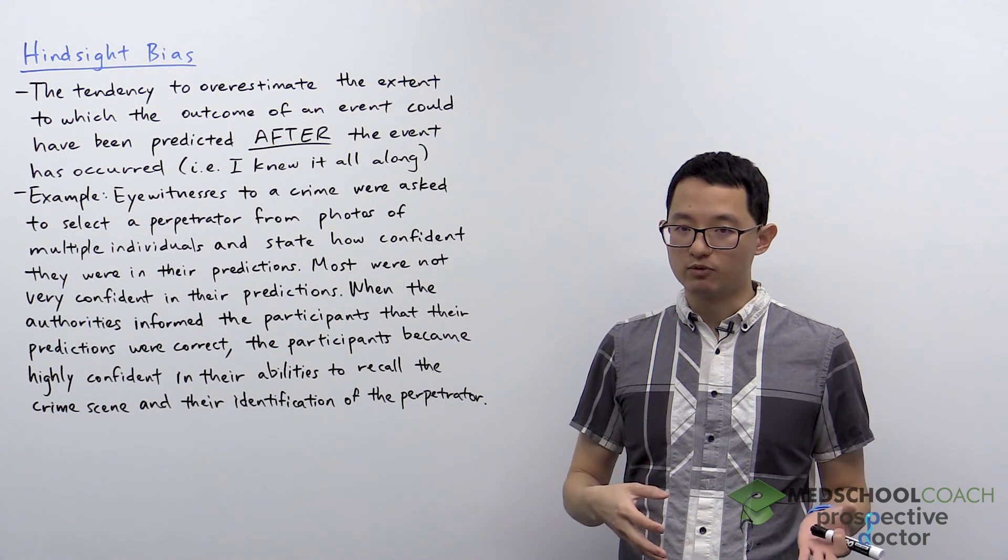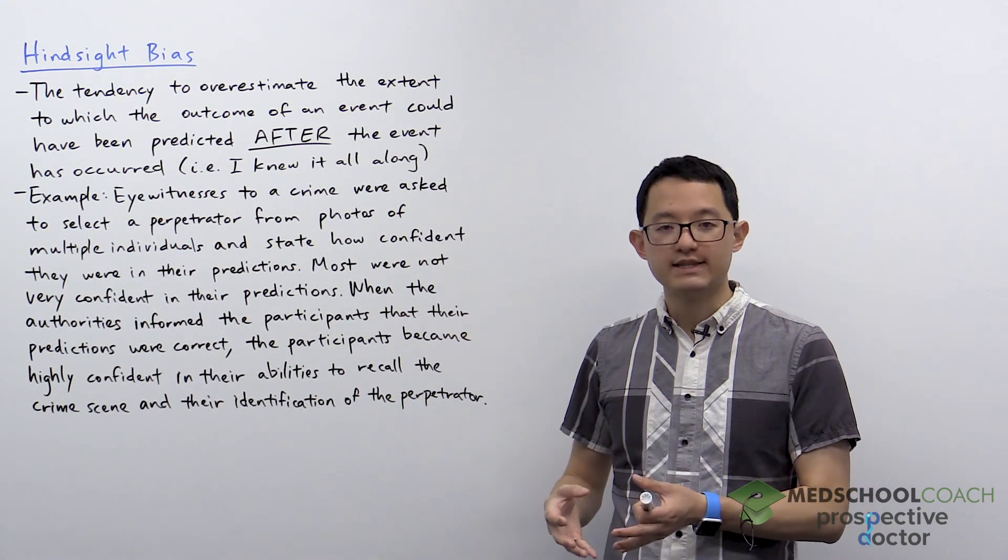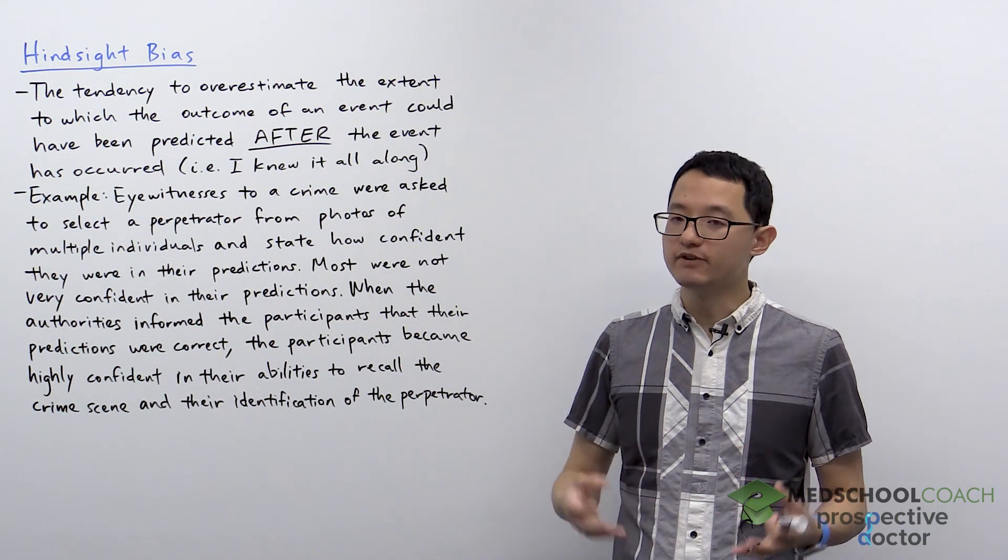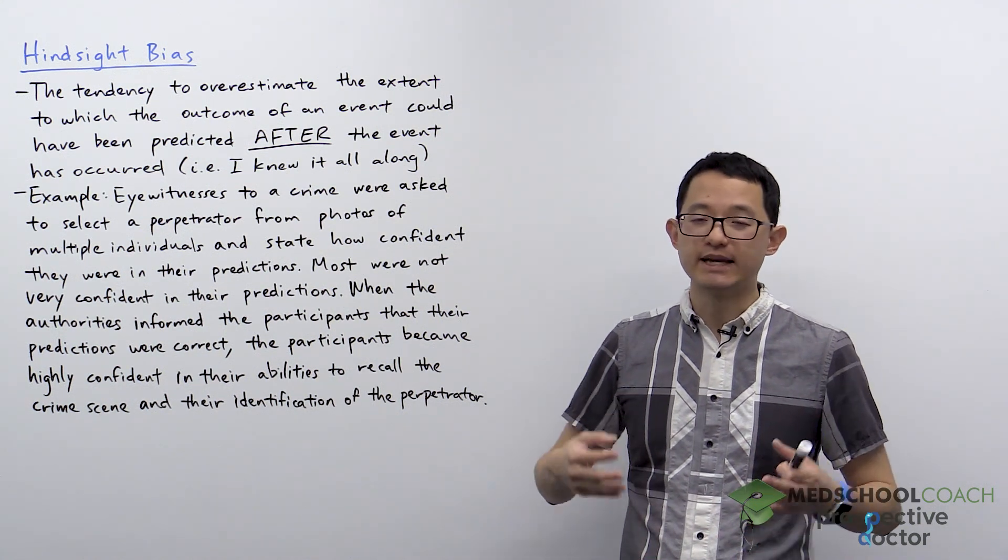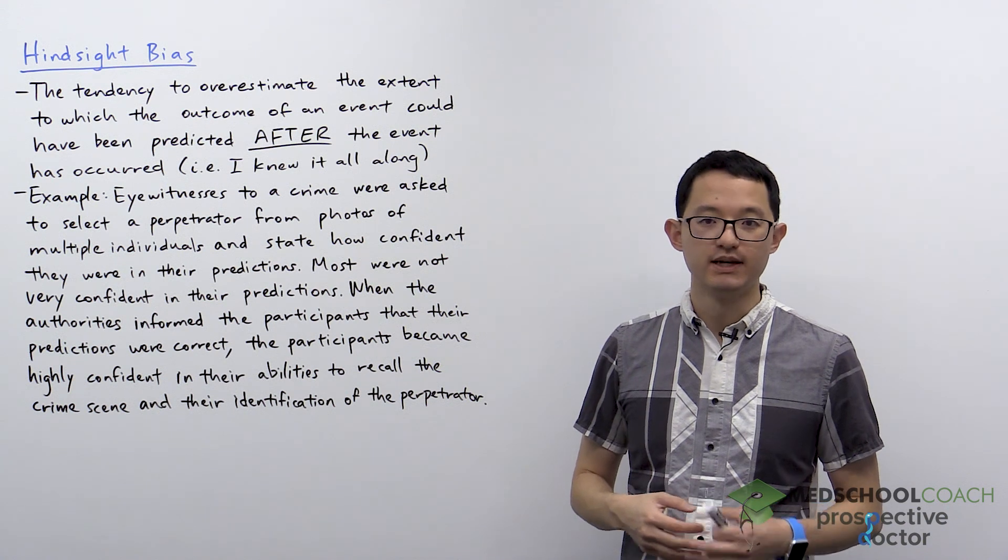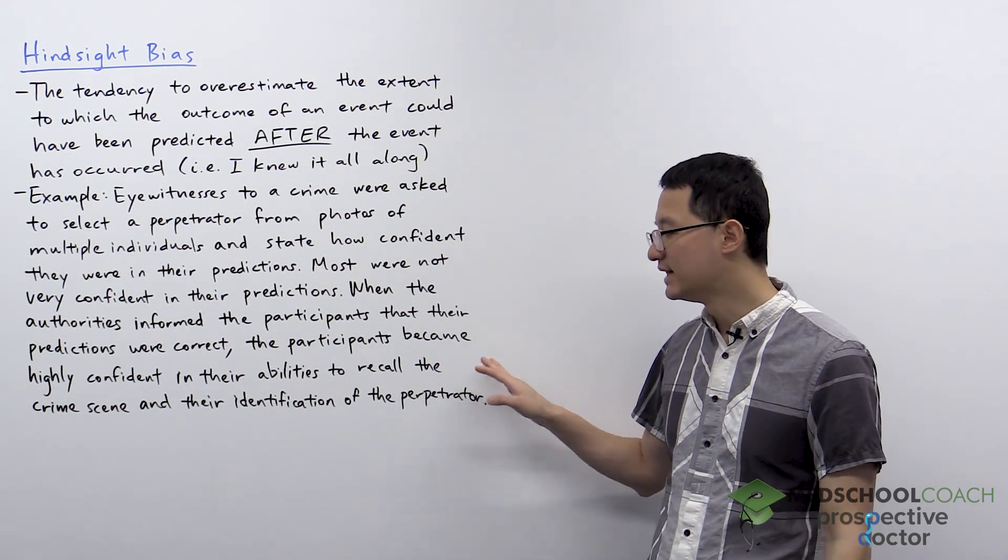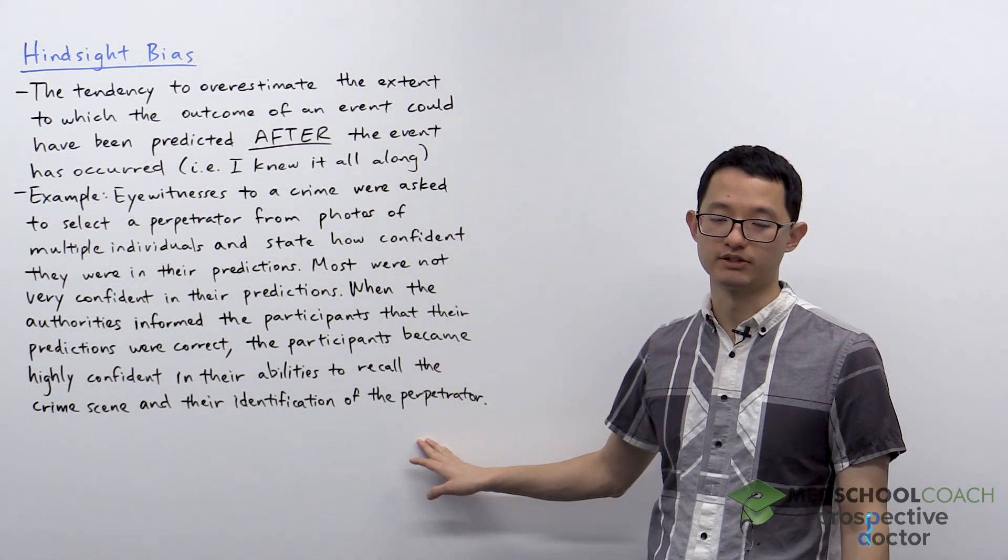However, afterwards when the authorities tell them that their prediction was correct, the eyewitness will suddenly become extremely confident. They become highly confident in their abilities to recall the event and their identification of the perpetrator.